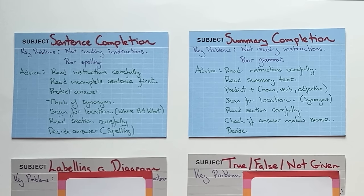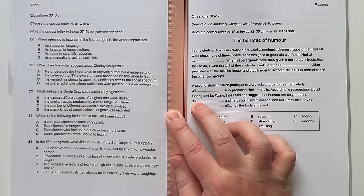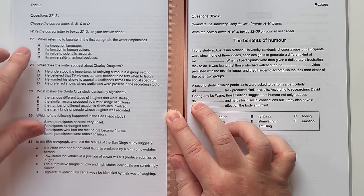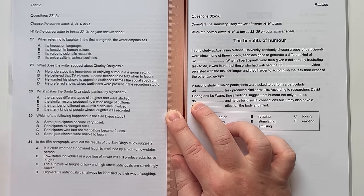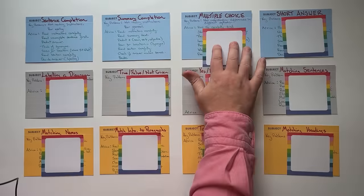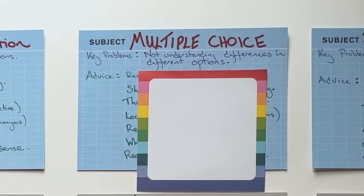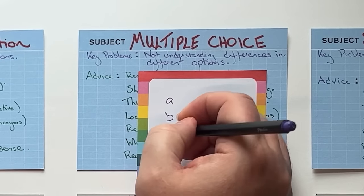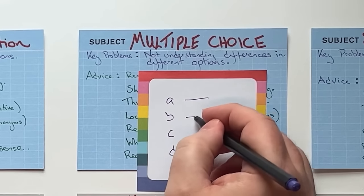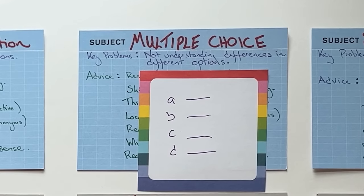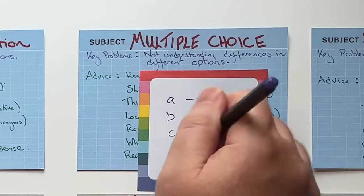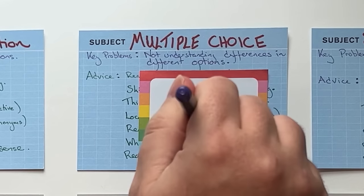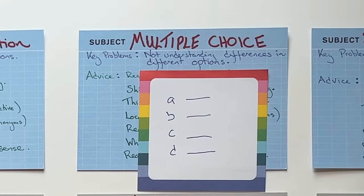These two question types are quite similar, which is why we've put them together. Here are some multiple choice questions — normally a direct question with three or four different options, and you have to choose the correct one. A completely different type of question. The key problem here is not really understanding the difference between the different options. There will be slight variations in meaning between the three or four options, and you need to understand those differences in order to answer properly.